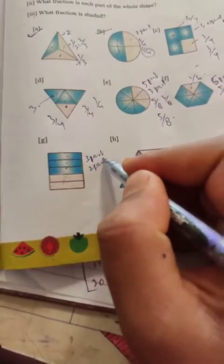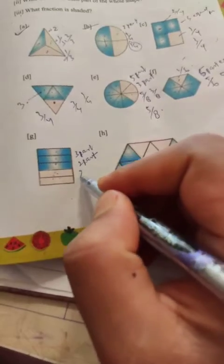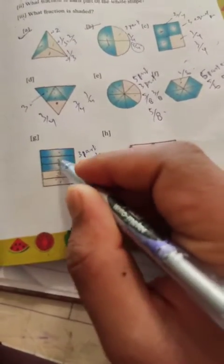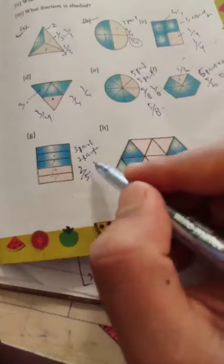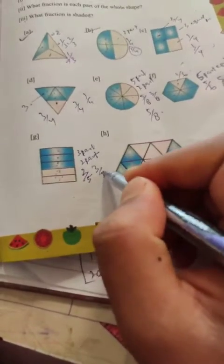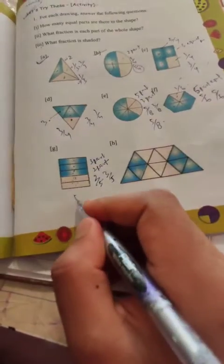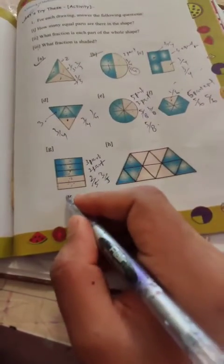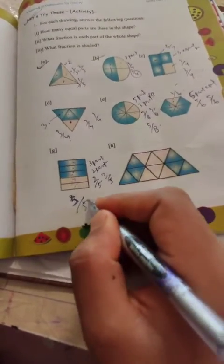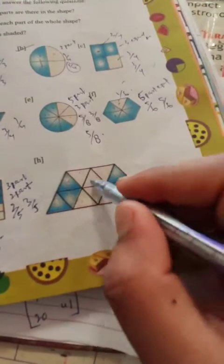What fraction is the whole shape? The whole shape is 2 by 5 or 3 by 5. Color in blue to show 3 by 5. The shaded part is 3 by 5.